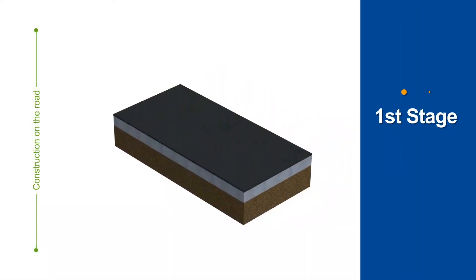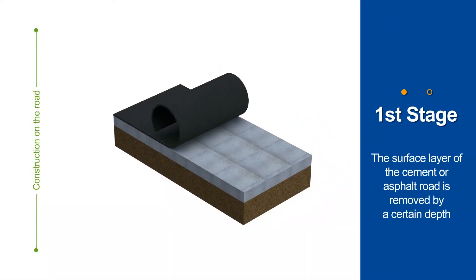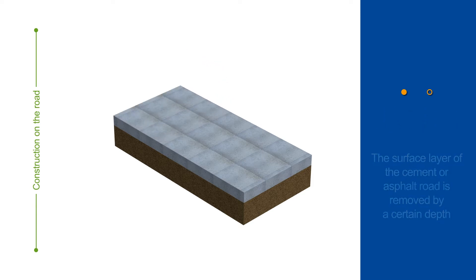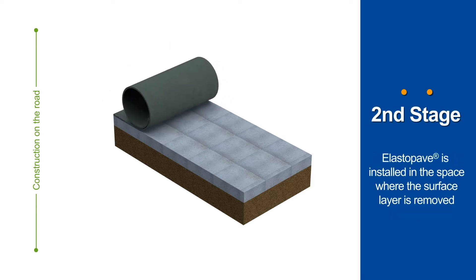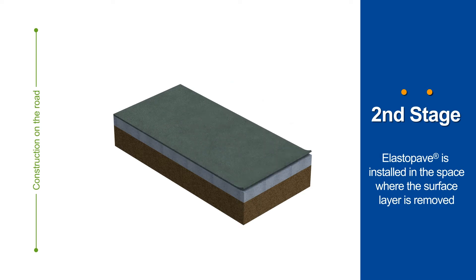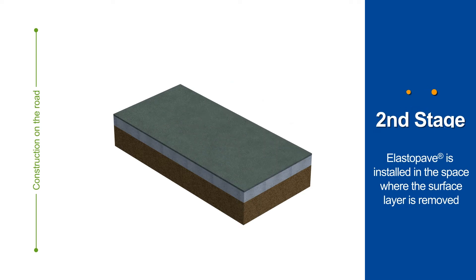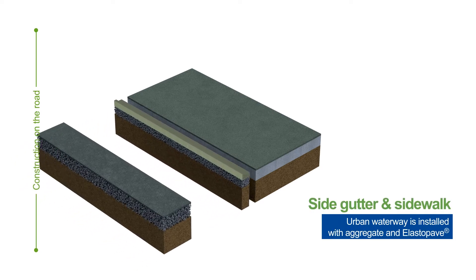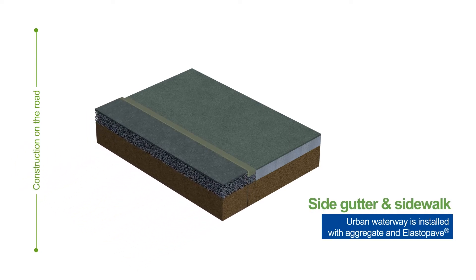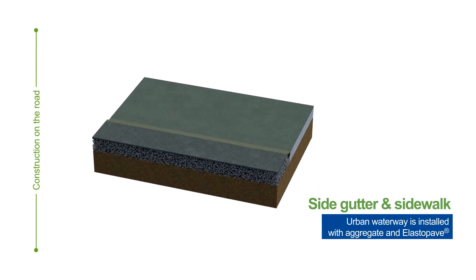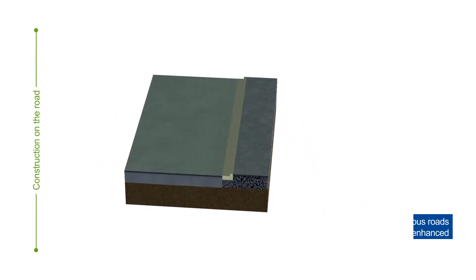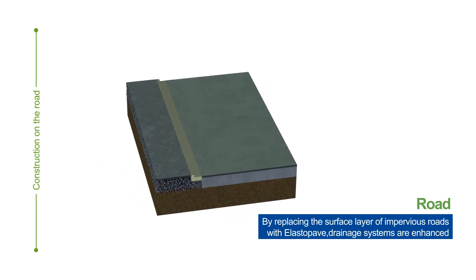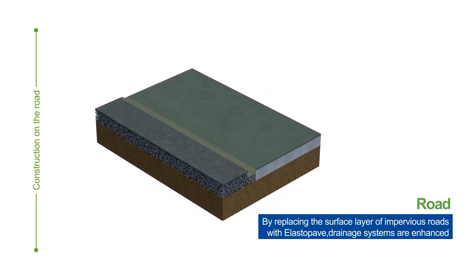The first step is to remove the surface layer of the cement or asphalt road by a certain depth. Next, ElastoPave is installed in the space where the surface layer is removed. At the final stage, an urban waterway made of aggregate and ElastoPave is introduced in the side gutter of the road and part of the sidewalk. By replacing the surface layer of impervious roads with ElastoPave, drainage systems are enhanced.